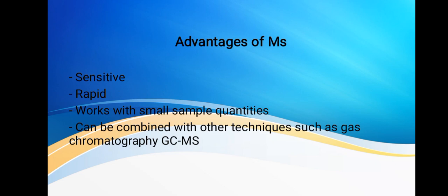Advantages of mass spectrometry: it is highly sensitive, it's also rapid, which is time-saving. It works with small sample quantities. This is especially advantageous where the amount of sample present is limited. Mass spectrometry can be combined with other techniques such as gas chromatography to form gas chromatography-mass spectrometry.